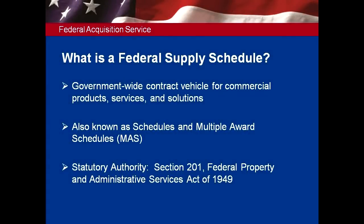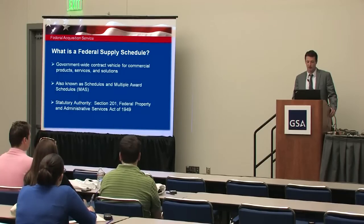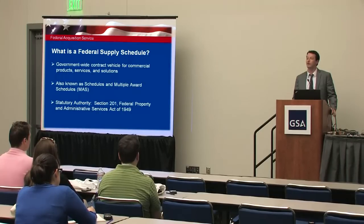So what is a Federal Supply Schedule? You may have heard of Multiple Award Schedules, FSS, MAS, or just schedules — all of that is the same thing. It's called Federal Supply Schedules in the FAR. It's a government-wide contract so anyone in the government can use it, and it offers commercial products and services — from supplies like pens and pencils to total IT solutions. It was established in 1949 by the Federal Property Administrative Services Act, giving GSA authority to set up the schedules program. We have also delegated authority to the VA, so they have their own VA schedules.